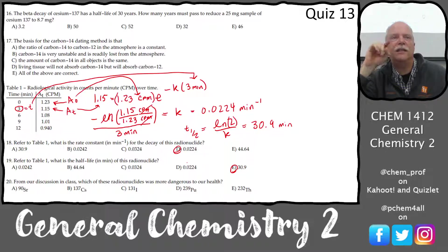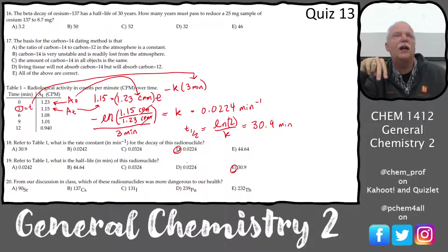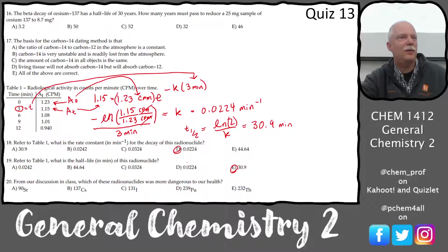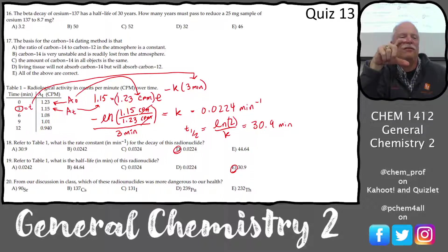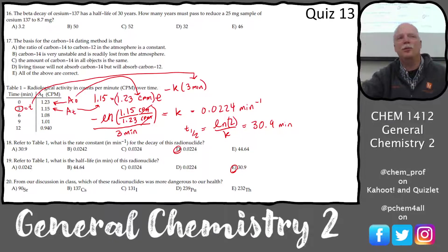It doesn't matter which time pairing you pick — if you check all of them for first-order kinetics, you get the same answer. If you had all that data and only needed two rows, why would you do the experiment five times? It's for statistics — you could get error bars to know how certain you are. You could calculate it all five ways, average them, and get a standard deviation for a really good number.